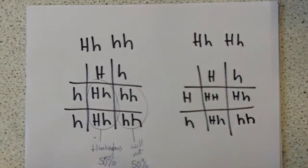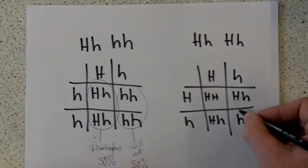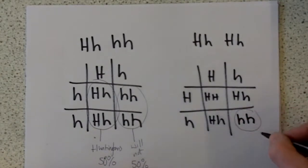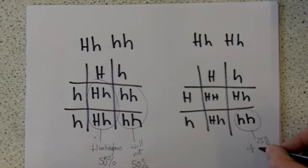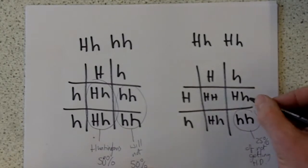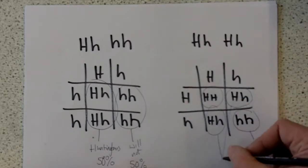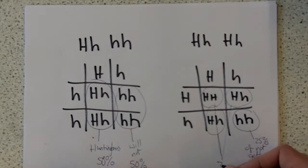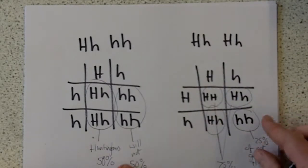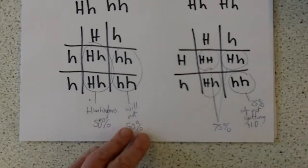So in this case, there's only 1 chance out of 4, so a 25% chance of not getting it. And in the other three cases, you will get it, so that's a 75% chance of getting Huntington's disorder.